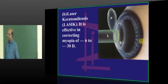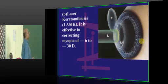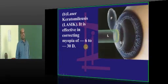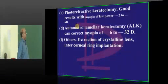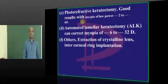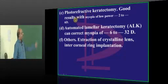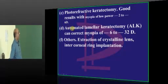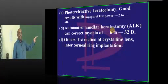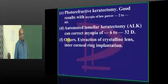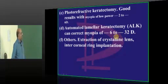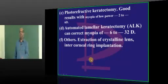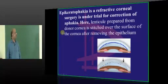Laser keratomileusis — LASIK — is very effective for correcting between minus 6 to minus 30 diopters. Photorefractive keratectomy (PRK) is typically done for low power myopia of minus 2 to minus 6 diopters. Automated lamellar keratotomy (ALK) can correct myopia between minus 6 to minus 32 diopters. Other options include extraction of the lens and intracorneal ring implantation.